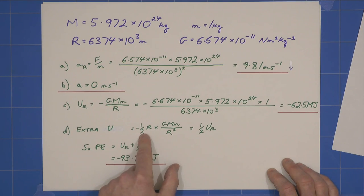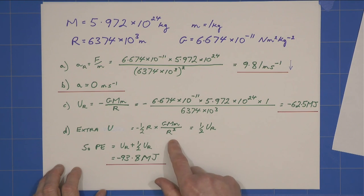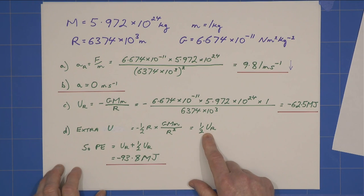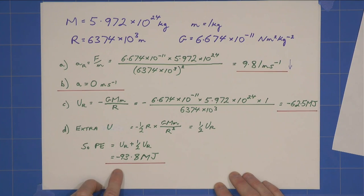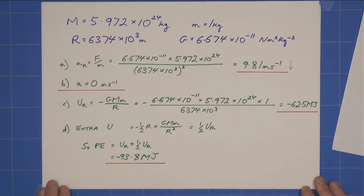So, the extra energy, as I've said, is half this half UR. So, the total potential energy at the centre of the Earth is, again, minus 93.8 megajoules. And that is my answer. Thank you.